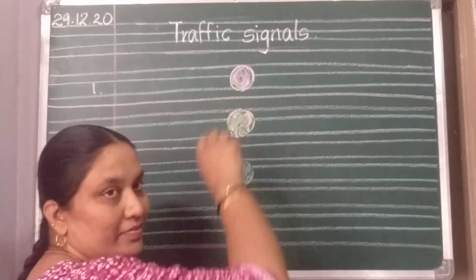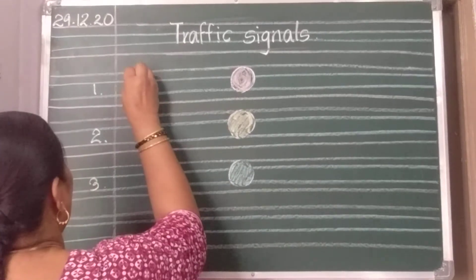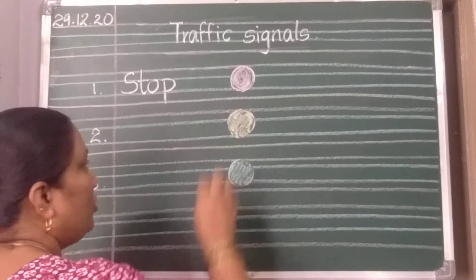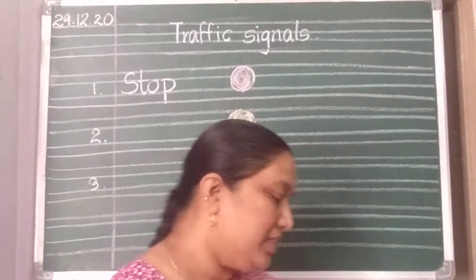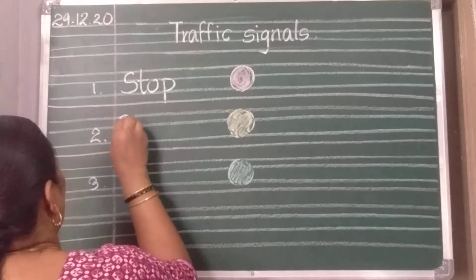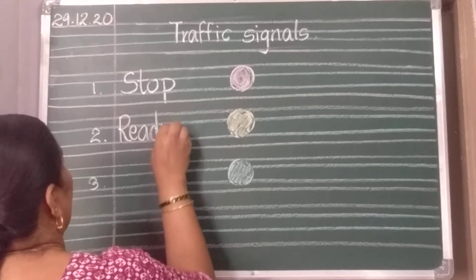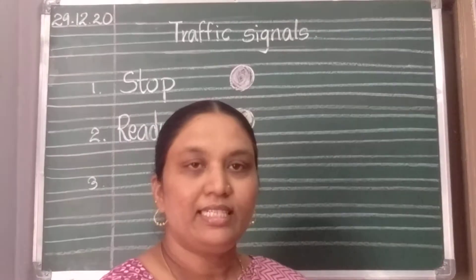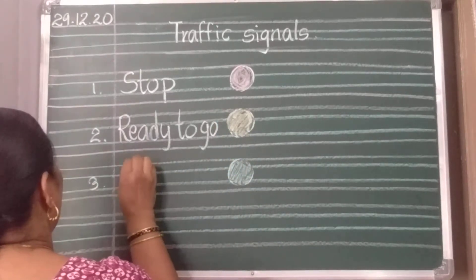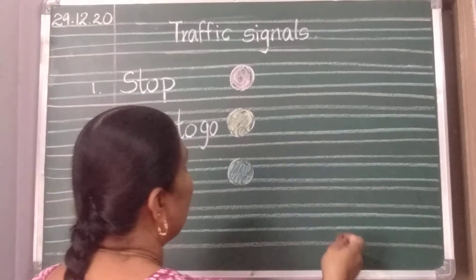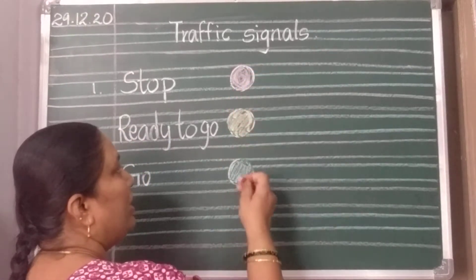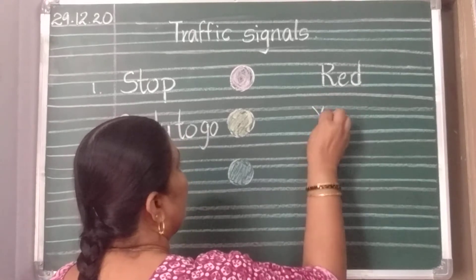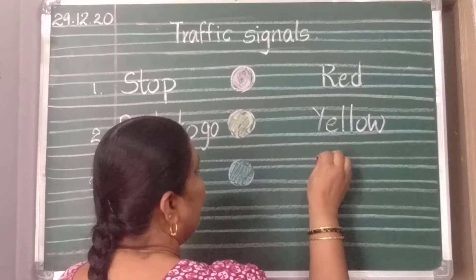What does the red light say? Red says stop. So write S-T-O-P. What does the yellow light say? Yellow says ready to go. What does the green light say? Green says go. On this side, write the colors: red, yellow, and green.